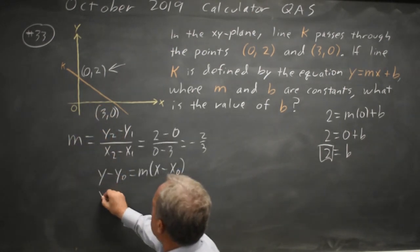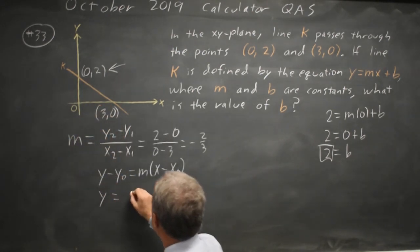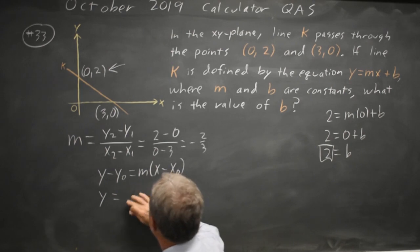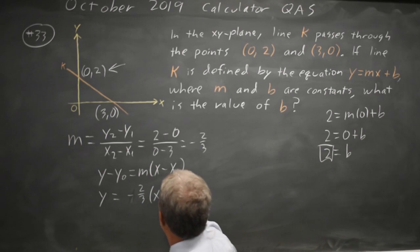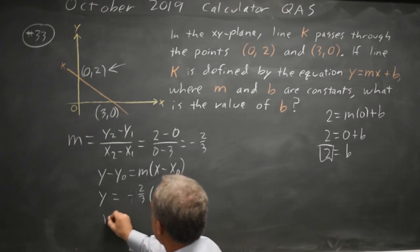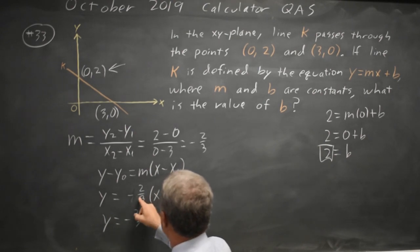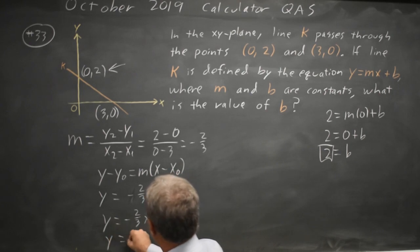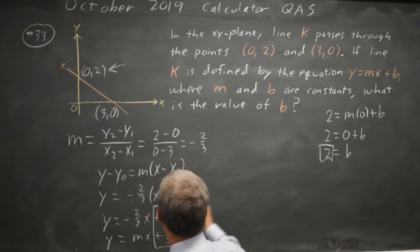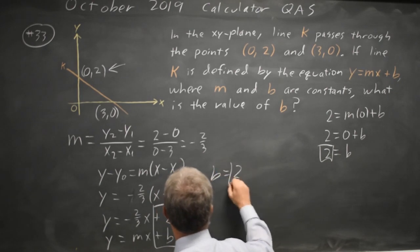And that's y minus zero is just y equals m, negative two thirds, times x minus the x value of 3. Distributing, y equals negative two thirds x. Negative two thirds times negative three is plus two, so y equals mx plus b. They're asking for b, so b equals 2 again.